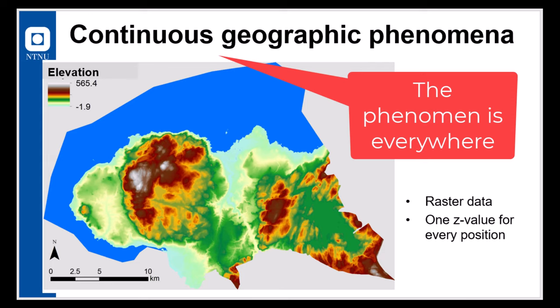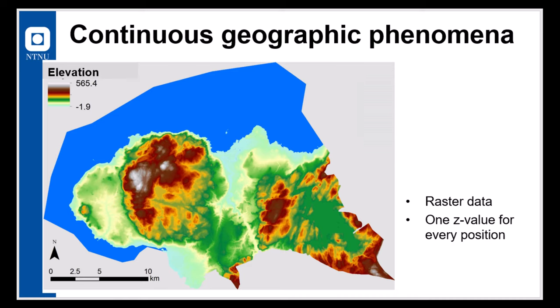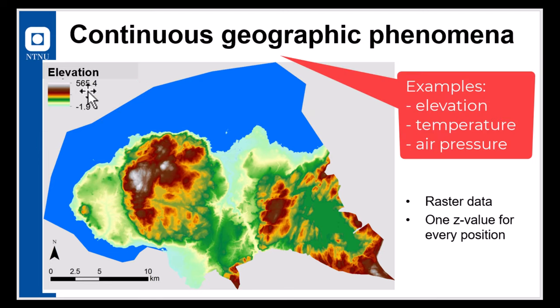So continuous means that the phenomena is everywhere. There is a set value for any location. So this is an example showing here of elevation in Trondheim, ranging from minus 1.9 below sea level up to more than 565. So other examples are temperature, air pressure. For any location, we have a temperature, we have an air pressure.